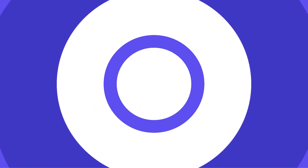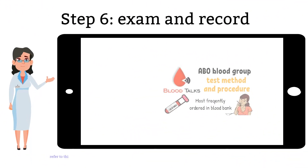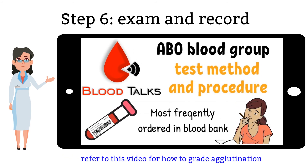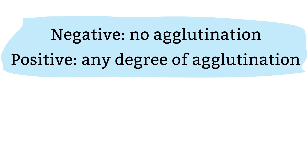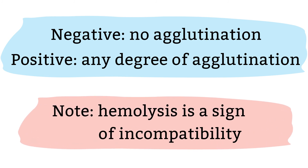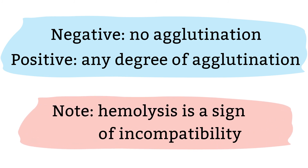Step 6: Examine for macroscopic agglutination or hemolysis and record the results. A negative result is when there is no agglutination observed. A positive result is when there are degrees of agglutination observed. Please note that hemolysis is a sign of incompatibility, which is why hemolyzed samples are not the best samples for blood bank testing.